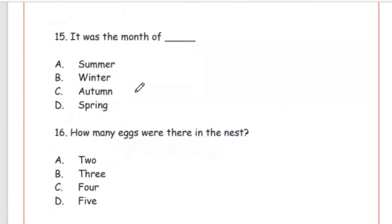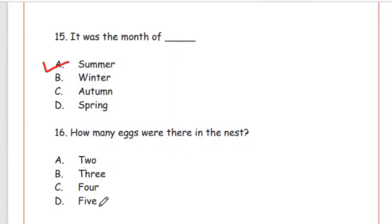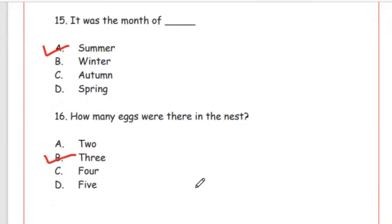Question 15: It was the month of — summer, winter, autumn, or spring? Answer is Option A, summer. Question 16: How many eggs were there in the nest? Options: 2, 3, 4, 5. The right answer is Option B, 3.